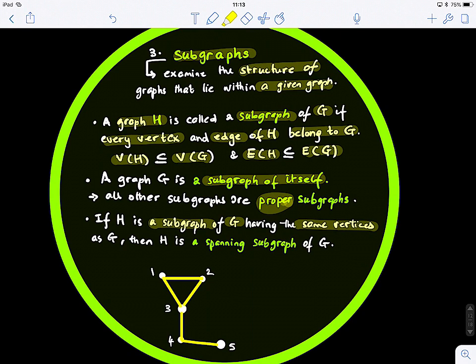So if H is a subgraph of G having the same vertices as G, then H is a spanning subgraph of G. So it means that in this case, let's look at this graph right here, and say, well, this H, right, this is our graph G.